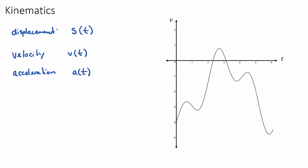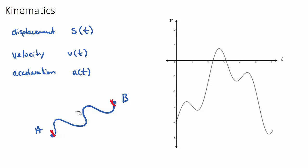Displacement is the distance you are away from your original starting point. The best example: if you start at point A and get to point B via a zigzaggy journey, the distance would be the entire length of that path. But the displacement is just how far away you are from your original spot — the straight-line distance from A to B, like a bird's eye view.